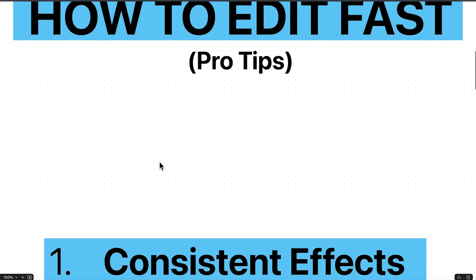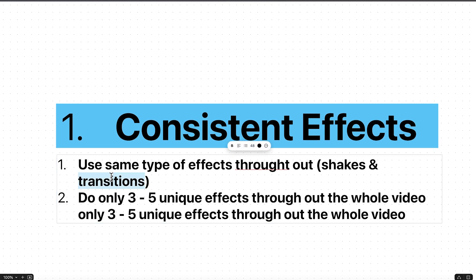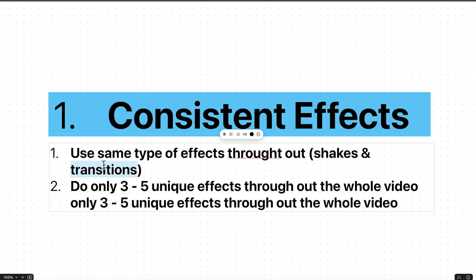Our first principle is consistent effects. What I mean by this is to use the same type of effects throughout the music video. If you're using a certain type of shake — maybe your own or from a pack — don't use different shakes every time. Just go with two or three shakes and repeat them throughout the video. This creates consistency with your style and also saves a lot of time, since you can just copy the adjustment layer and be done.